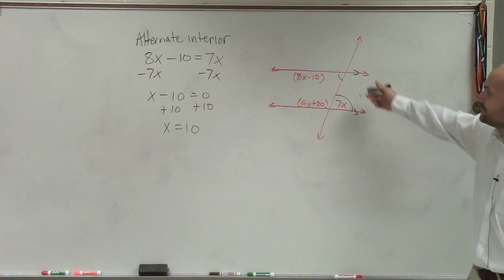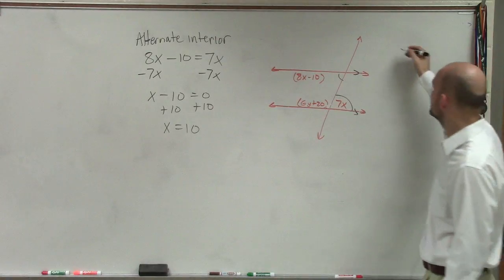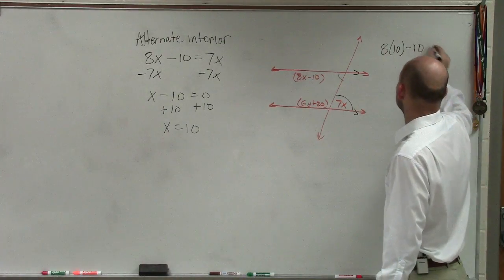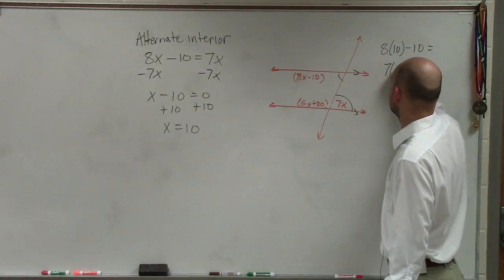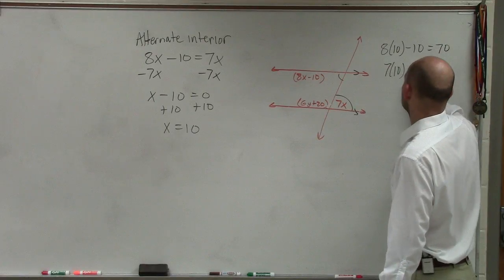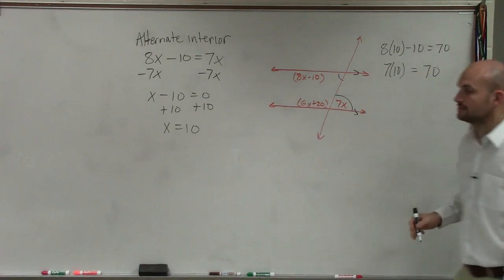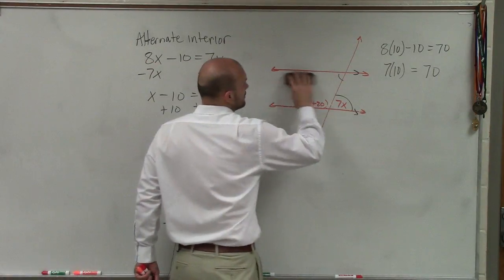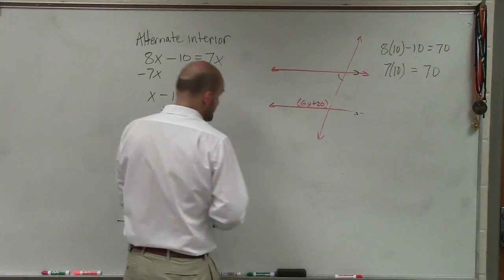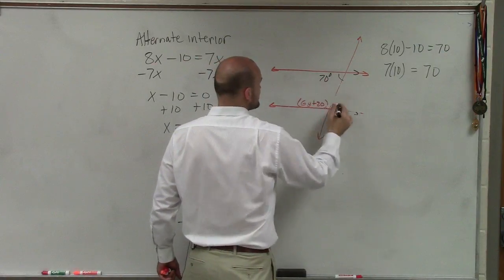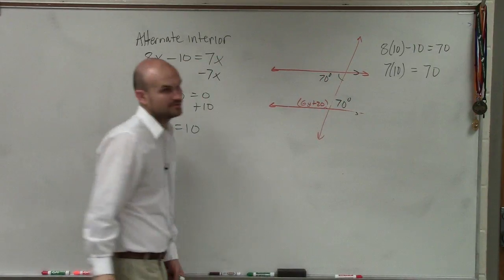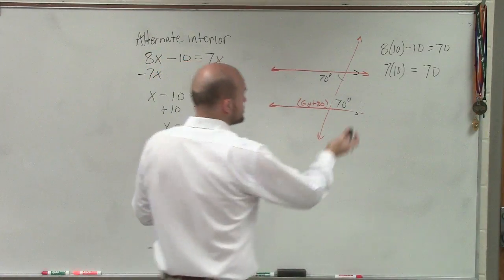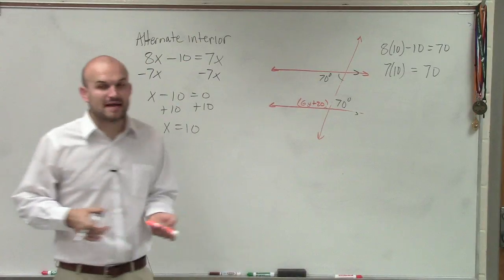So now, ladies and gentlemen, I can figure out the value for each one of these. So if I say x equals 10, I could say 8 times 10 minus 10 equals that angle, and then I have 7 times 10. Well, that's going to equal 70, and that equals 70. So therefore, these two angles, instead of using equations, I'm now going to write in their value. So that's 70 degrees, and that's 70 degrees. Does everybody agree with what I did? I just took the value of x, plugged it into those equations to find my now measure of my angle.